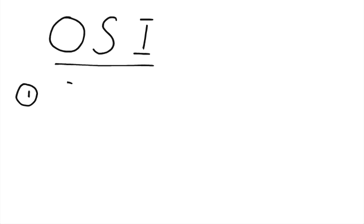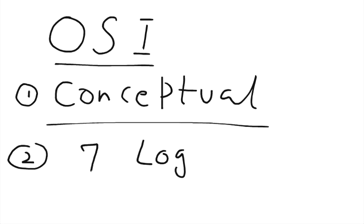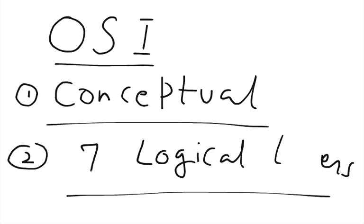OSI stands for Open Systems Interconnection and the OSI model is a conceptual model. It's not a physical model, but it's a conceptual model which explains how two or more computers or devices or nodes on a computer network communicate with each other, and how a communication system works. This conceptual model divides similar communication functions into seven logical layers, and now we will discuss about those logical layers.